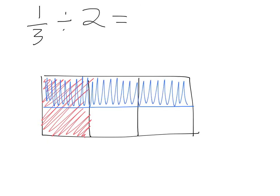We can see that the blue represents one-half, the red represents one-third. And when we multiply them together, we get one-sixth. So I hope that helps.